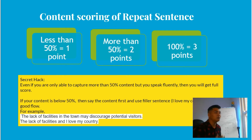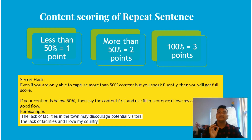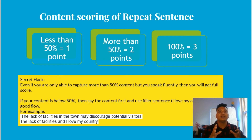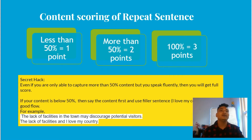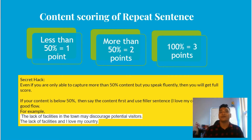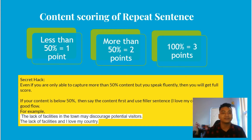Even if you are only able to capture more than 50% of the content, but then you speak fluently, you will still get full points for fluency. You will still get full points for speaking — 100%. If you have 50% content, you will get full points — not just 2 points.